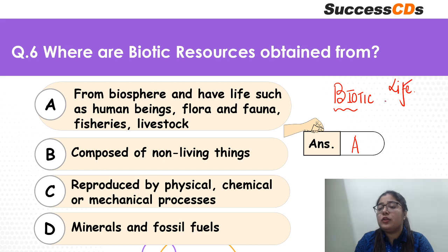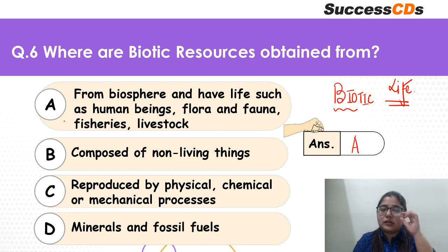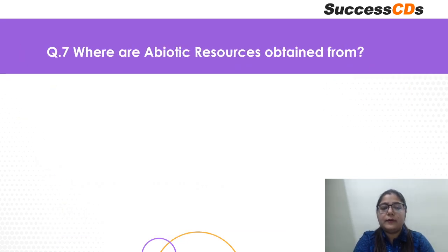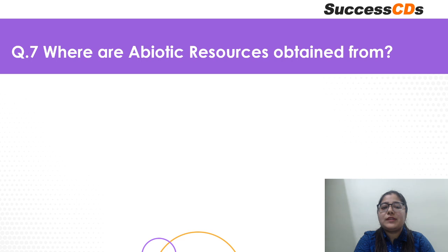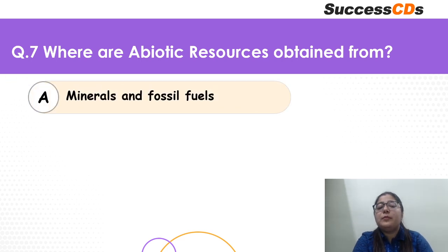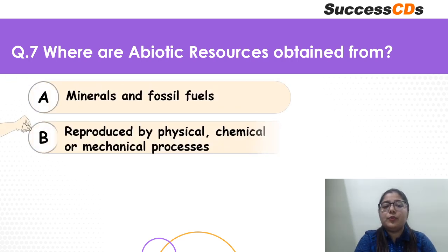Biology is the study of life and living organisms — so if you have a correct answer here, it is definitely option A. All the other options are wrong. Coming to question 7: where are abiotic resources obtained from? Mineral and fossil fuels, reproduced by physical, chemical or mechanical processes, composed of non-living things, or from biosphere?